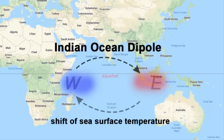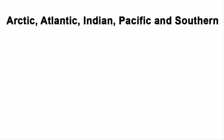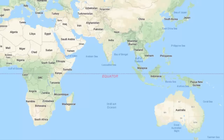It is similar to El Niño and La Niña in the Pacific Ocean. Now the question is, why does the Indian Ocean have a dipole? Out of the five oceans on earth, the Indian Ocean is the warmest ocean, and the second warmest is the Pacific Ocean. If you look at the Indian Ocean, it is surrounded by landmasses on three sides.